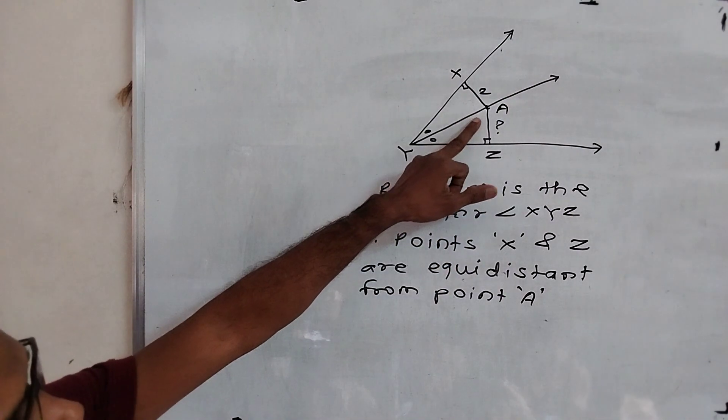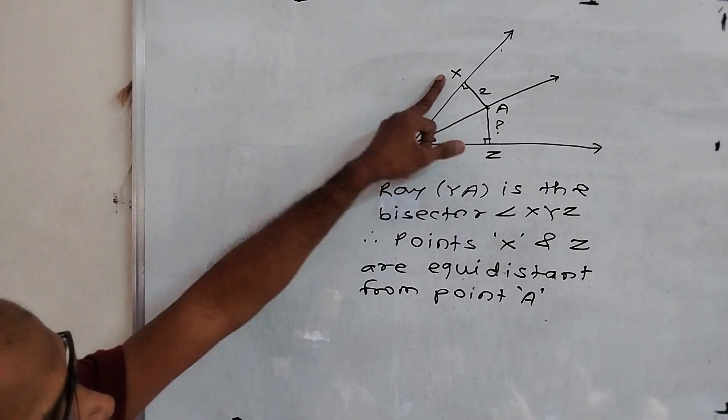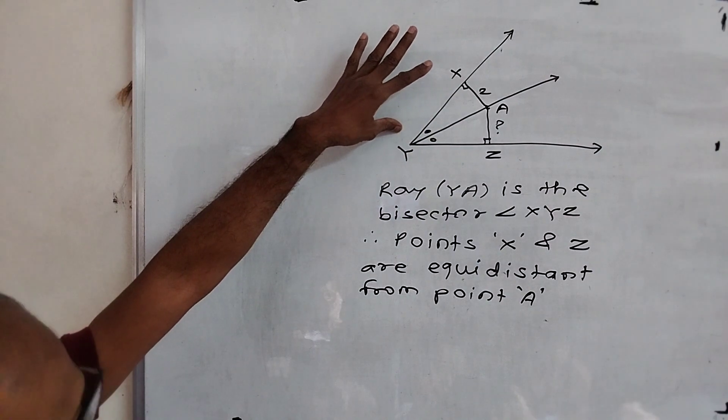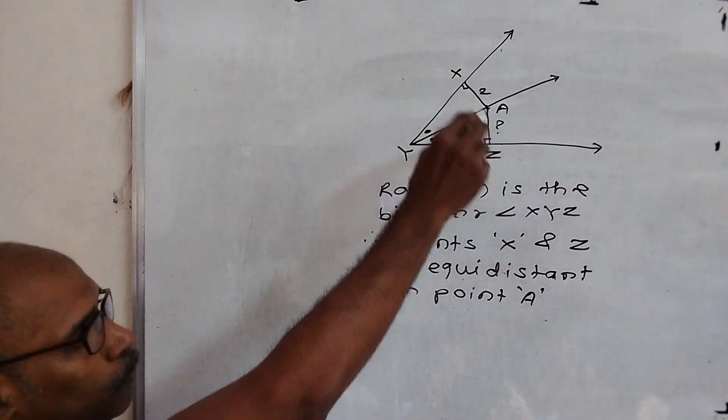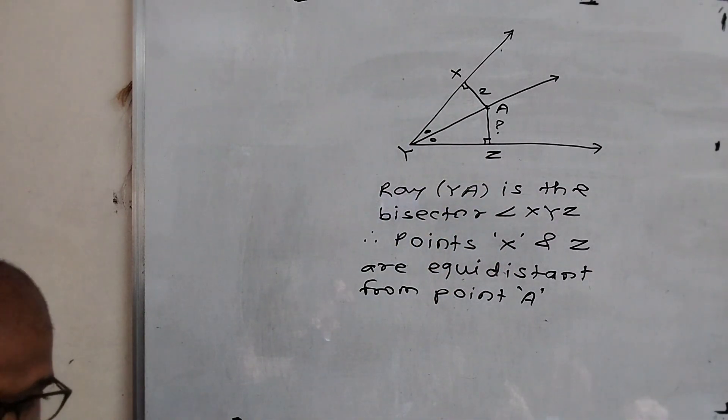See here, this is on the angle bisector. AX perpendicular to ray YX, and AZ perpendicular to ray YZ. Both are perpendicular from same point A.